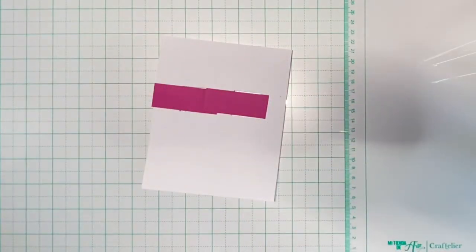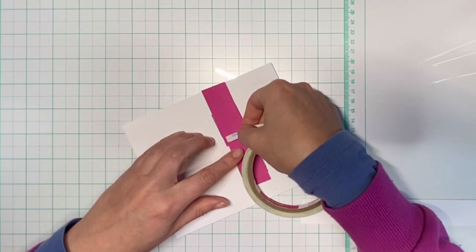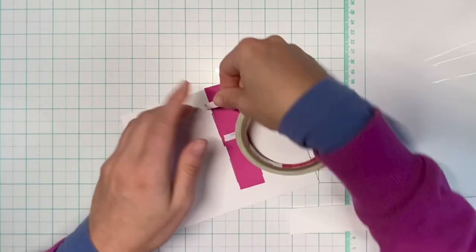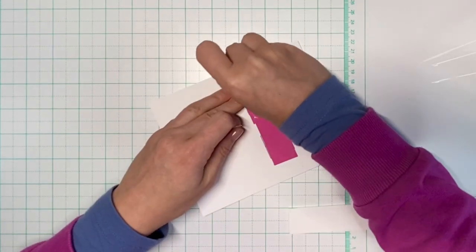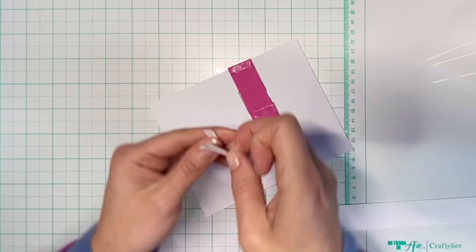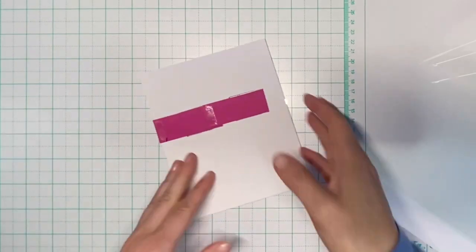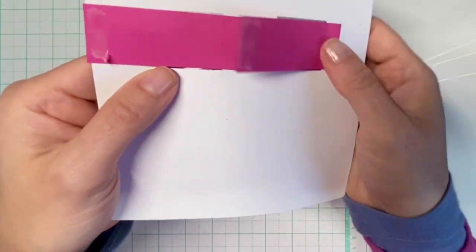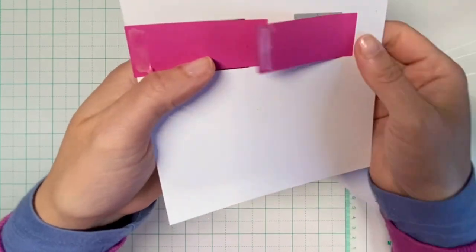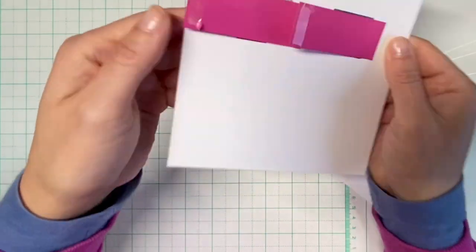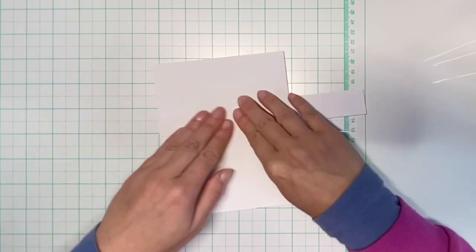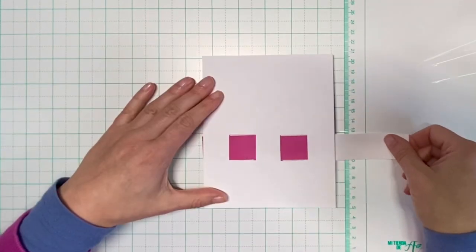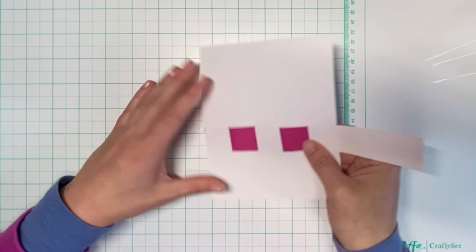Then I will adhere both of these strips to one pull tab. So they will get adhered to the same pull tab piece.